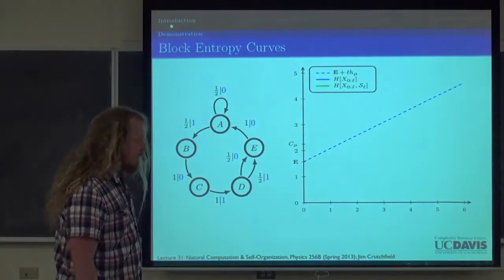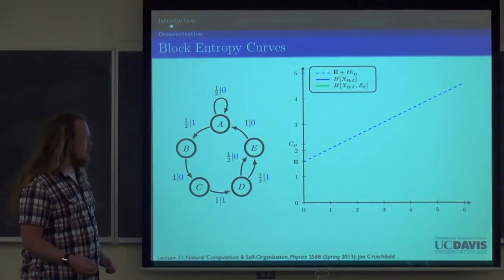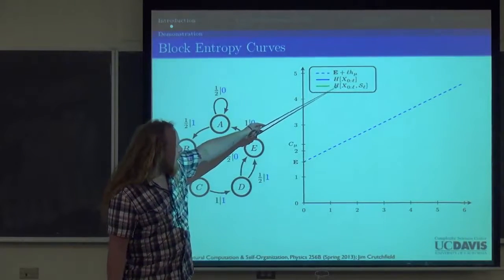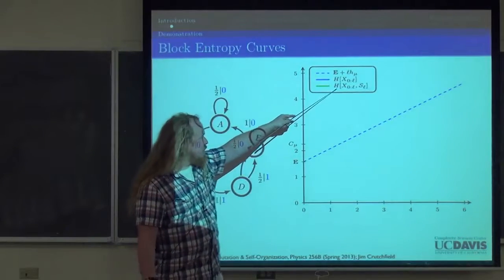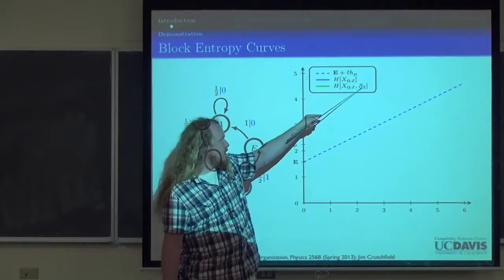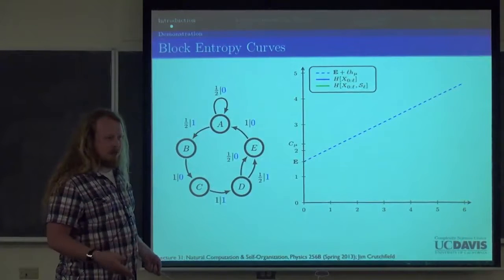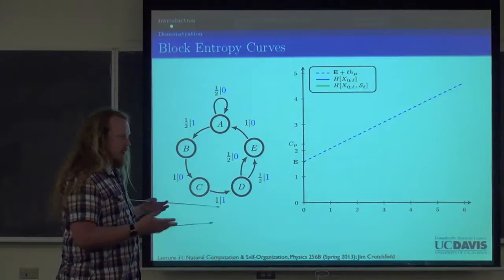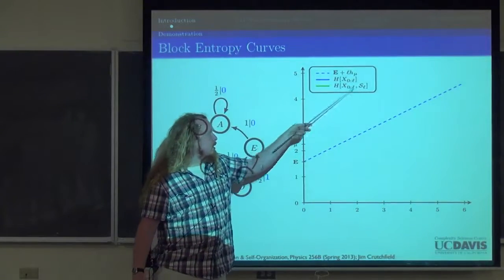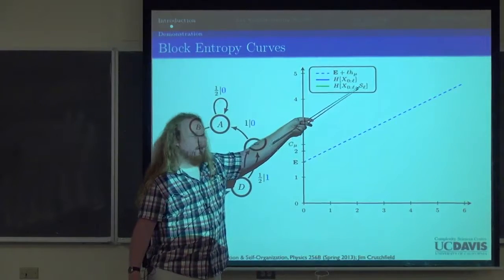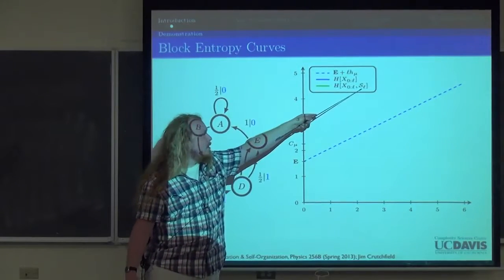The naive approach to calculating the Markov and cryptic orders is using block entropies and block state entropies. The block state entropy is the entropy of not just a block of symbols, but also the state induced upon seeing those symbols. Like with the even process, if you see a bunch of ones you're in a mix of A and B, but if you ever see a zero you know exactly what state you're in. So if this block has a zero in it, it contributes nothing to the entropy.